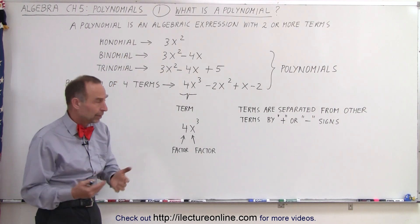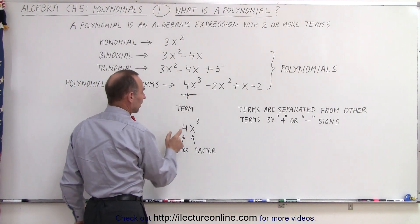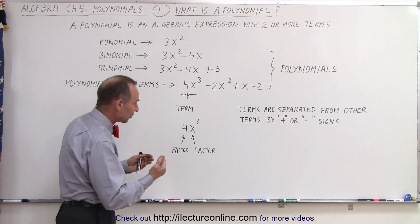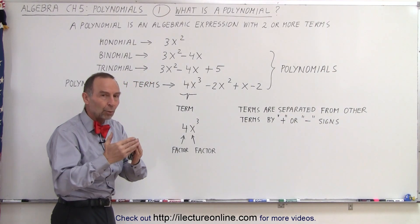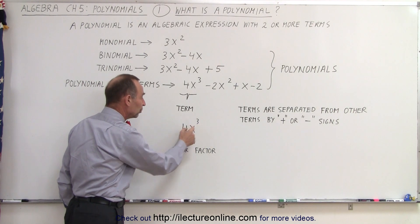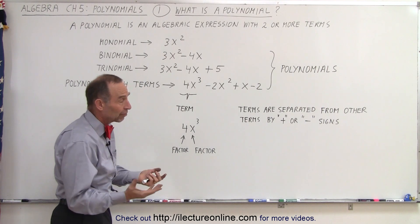Of course, what is a term? A term is a part of an expression that is consistent of one or more factors. A factor is something that's multiplied with another factor. In this case, four is multiplied times x cubed, so four is a factor, and x cubed is a factor.